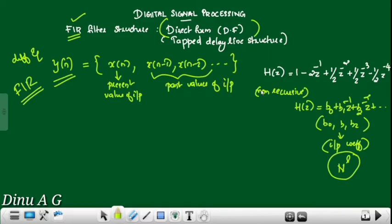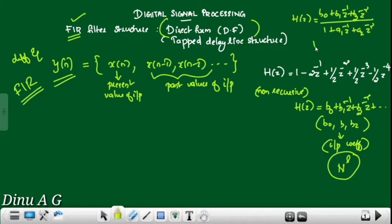IIR Direct Form 2 uses the minimum number of delay elements. The general IIR system function has the form: H(z) = (B0 + B1·z^(-1) + B2·z^(-2)) / (1 + A1·z^(-1) + A2·z^(-2)). The numerator and denominator are both present in IIR.